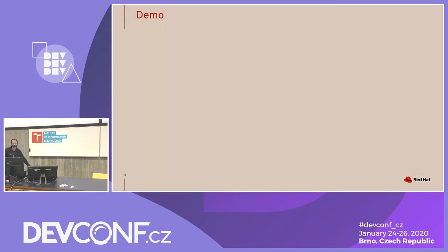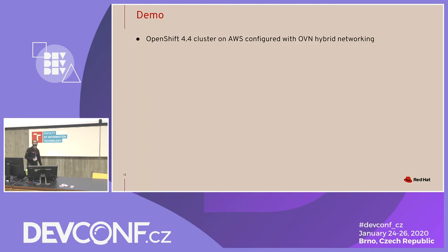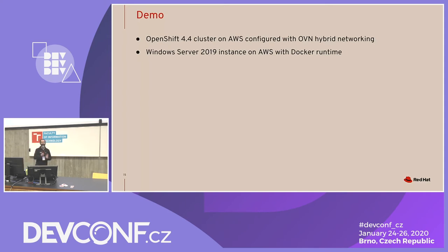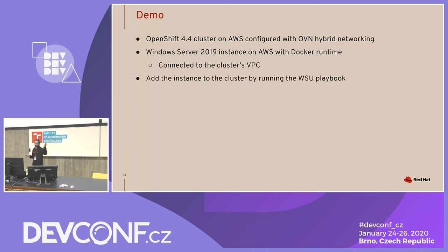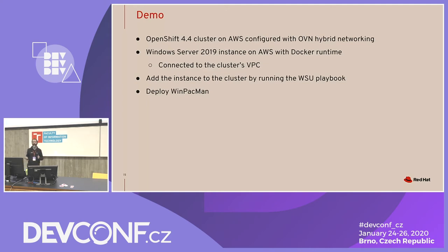Let me also explain what I'm trying to show in the demo. I'm running on an OpenShift 4.4 cluster configured with OVN hybrid networking. I already have a Windows Server 2019 instance running on AWS — that was in the host file — and that instance is connected to the cluster's VPC. In the background, that instance is being added to the cluster by running the WSU playbook. Hopefully it'll succeed and if it does, we'll get to play some Pac-Man.